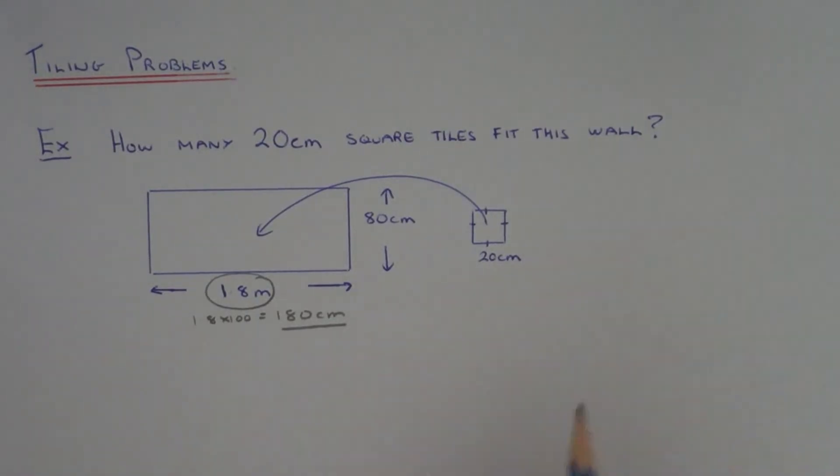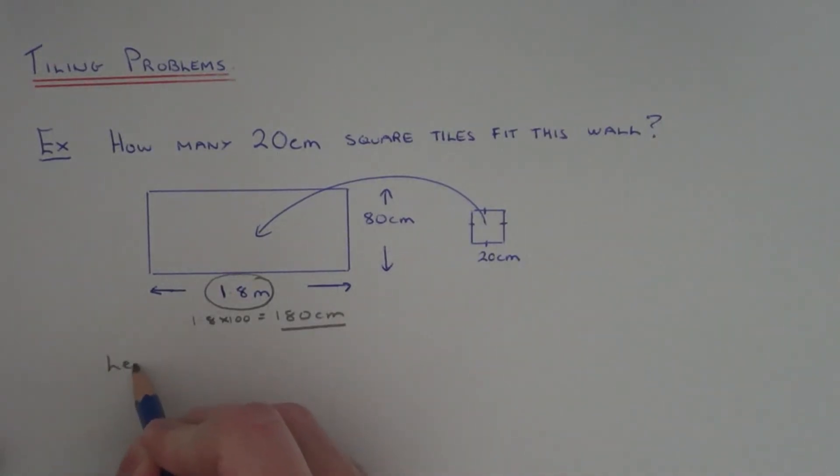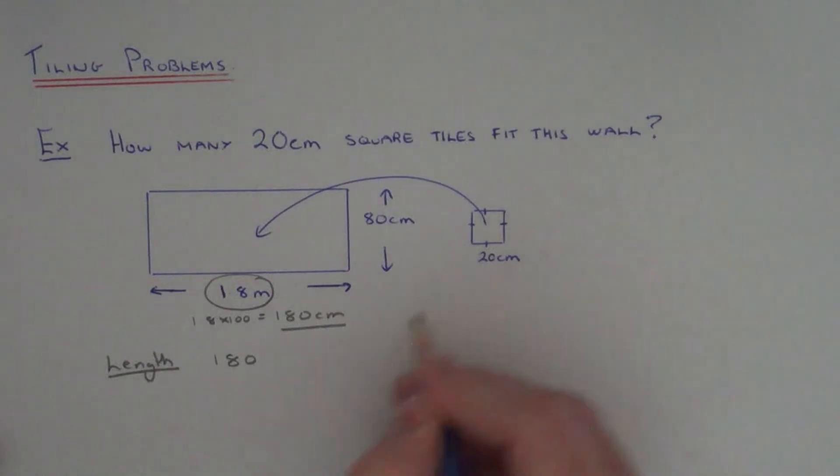Next we can figure out how many of these tiles fit along the length of the wall. You can do this by dividing the length of the wall by the length of the tile. So it's 180cm across and we divide that by 20.